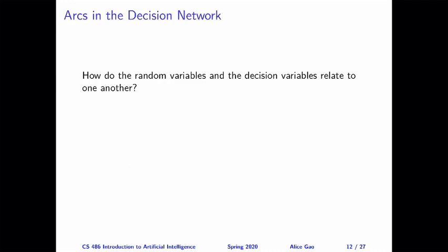Okay, so given this, there might be arrows pointing from the decision nodes to the random variable accident. So let's think about is there a relationship, is there an influence or not?